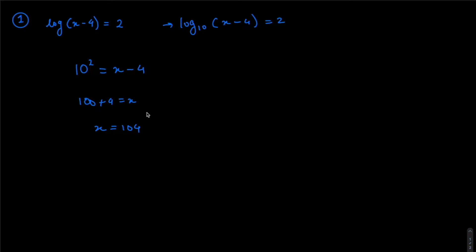We can check our answer: 104 − 4 = 100, and log base 10 of 100 equals 2. When practicing, you can use your calculator or Desmos — plot two functions and find their intersection point. That's a very simple, straightforward verification method.